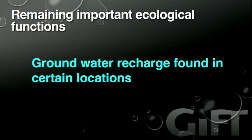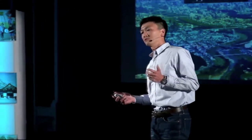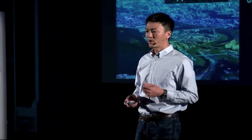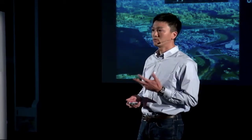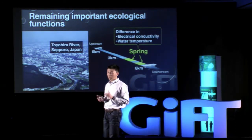Simply put, what we found is that there are places where salmon receive a lot of influence from groundwater coming up from the riverbed. We conducted our survey in the Toyohiro River — you may be familiar with it. The Toyohiro River flows through the center of Sapporo City, where nearly two million people live. Amazingly, in some locations this river still receives a substantial amount of groundwater recharge from the riverbed, which cannot be seen just by looking at the river from the ground.